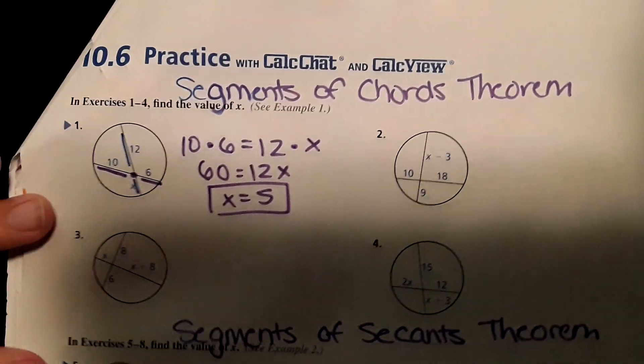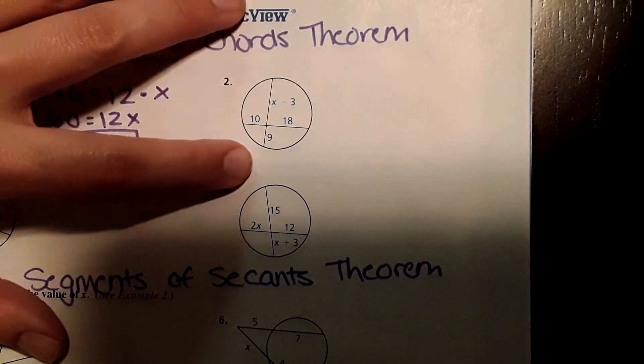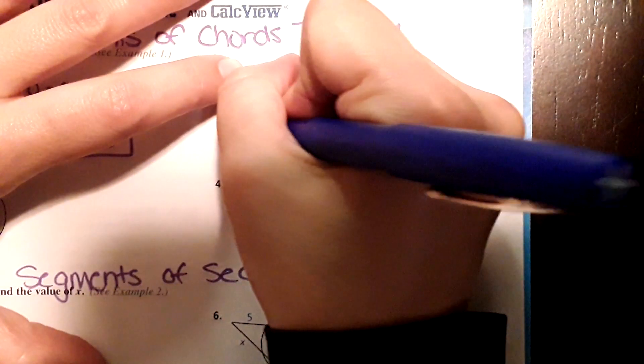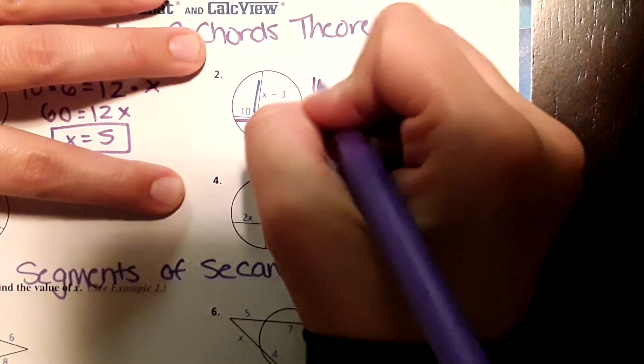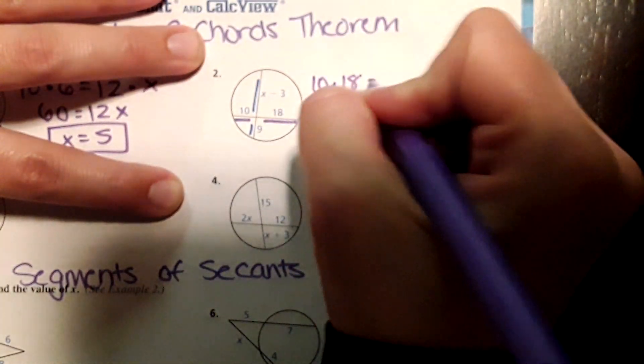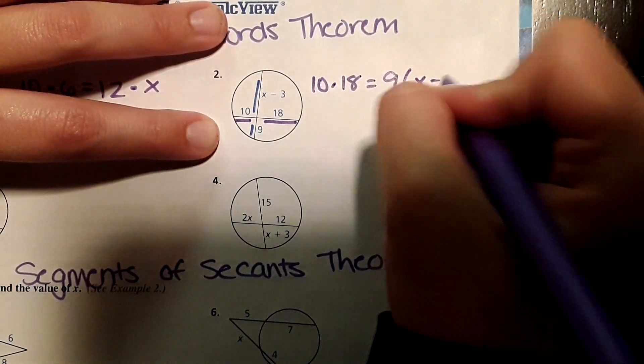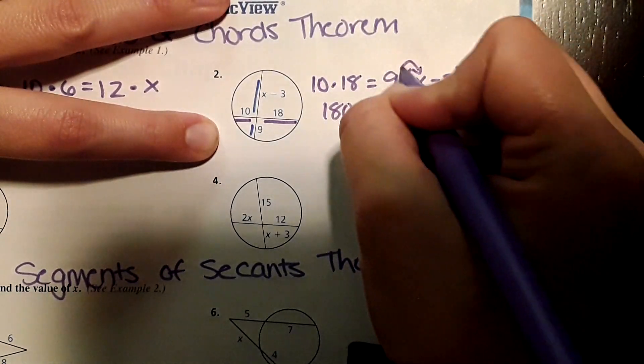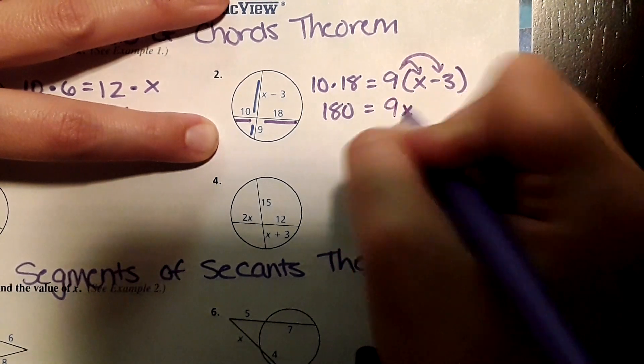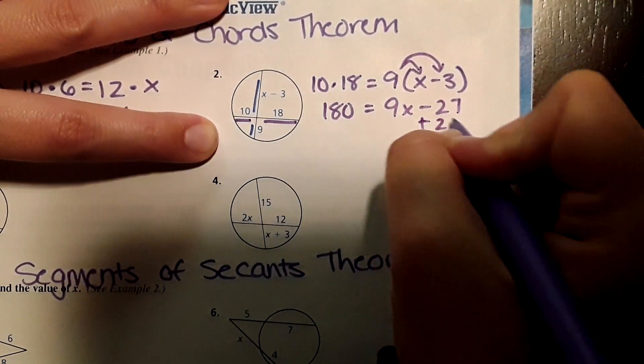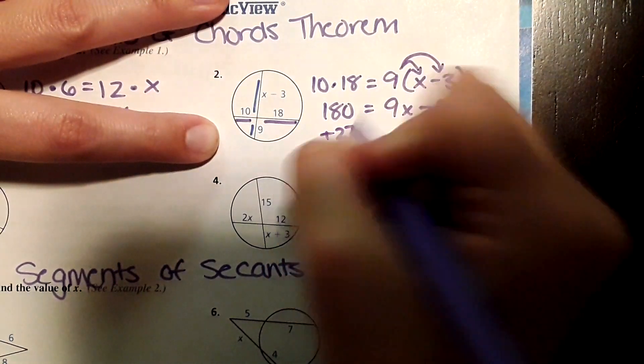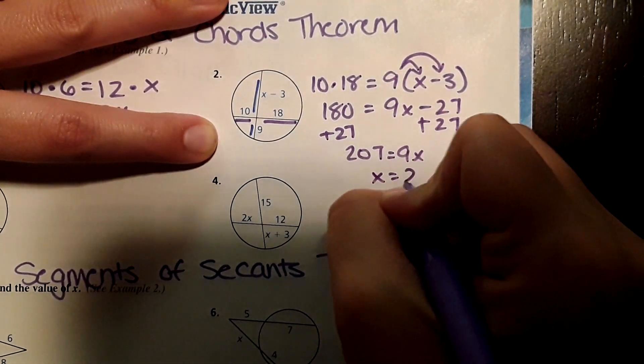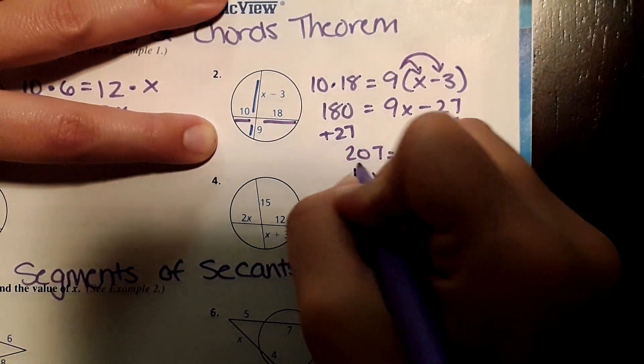We're going to repeat that for number 2. Again, I'm doing 10 times 18 equals 9 times X minus 3. This would be 180, and when I do the 9 times this, I distribute that 9, so 9 times X is 9X minus 27. Add 27 to both sides: 207 equals 9X, and then this divides to 23.